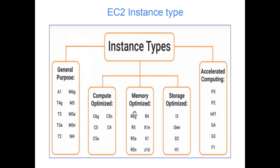There are also Memory Optimized instances, where you want to do in-memory operations — for example, cache memory where recently accessed items are kept in cache. Apache Spark is an in-memory data processing technique: it loads data once and keeps performing different types of operations and transformations in memory. For such Spark jobs, we need Memory Optimized instances.